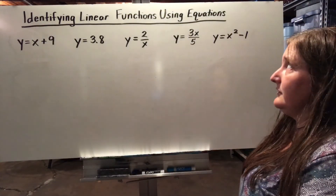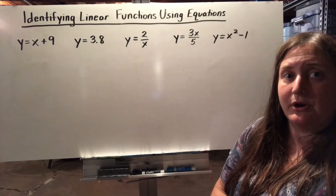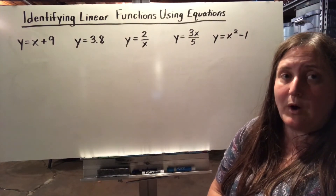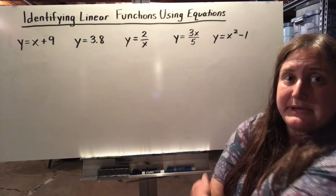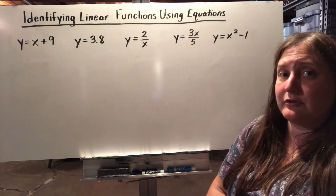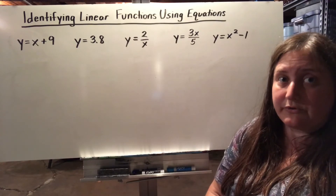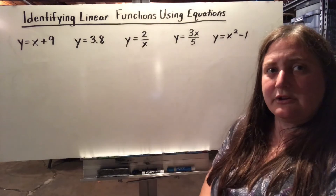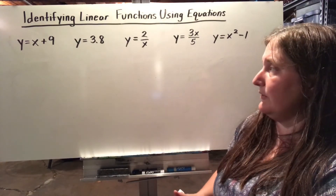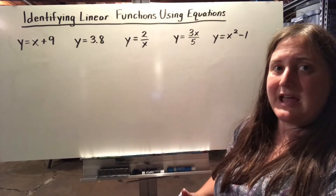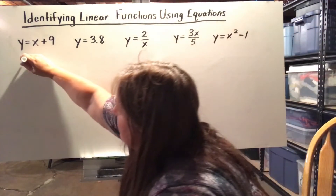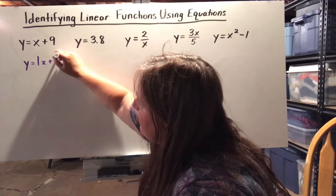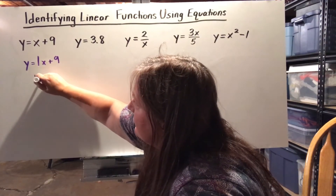Lastly, I can identify linear functions by looking at their equations. Remember, equations of linear functions can always be written in the form y equals mx plus b, where m and b are constants — and those constants can be 1 or 0. Looking at this equation, it initially looks like y equals mx plus b, except there's no explicit m value. Well, I can put a ghost 1 in there — it's just a single x — and now it's in that form. So this represents a linear function.